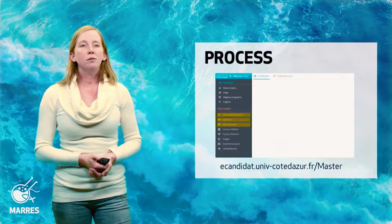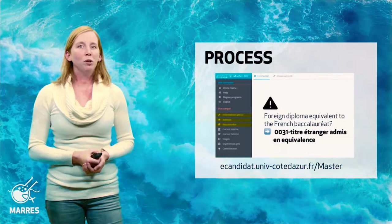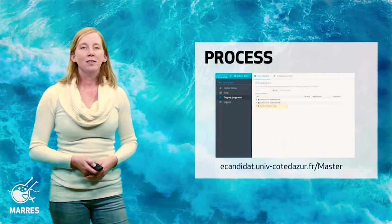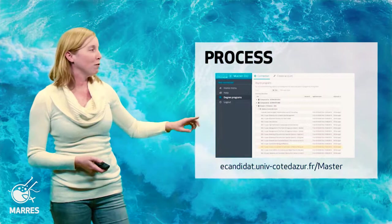The baccalaureate is a French high school diploma. If you do not have a French baccalaureate, this is really no problem — just choose option 0031 for an equivalent high school diploma. MARES is part of our international programs and you can find it under Master of Science: MSc in Science, Conservation and Valorization of the Marine Resources, at the bottom of the page.